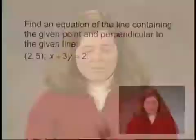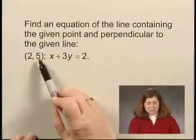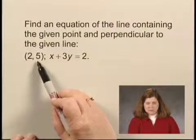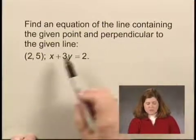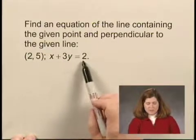In this exercise, we'll find an equation of a line. We're given a point on the line, 2, 5, and we're told that the line we're looking for is perpendicular to the line x plus 3y equals 2.